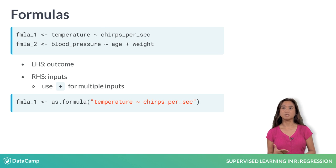A formula in R is designated by a tilde. The left-hand side of the formula is the outcome you want to predict, such as temperature or blood pressure. The right-hand side of the formula holds the input variables. You can concatenate multiple input variables with a plus sign. To convert a string into a formula, use the as.formula function.